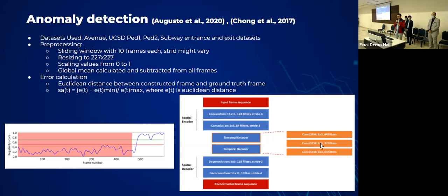The network is shown here to the right on this slide. An input frame is composed of 10 frames, rescaled to 227 pixels by 227 pixels. The network is composed of three parts: a spatial encoder, a temporal encoder and decoder, and a spatial decoder.